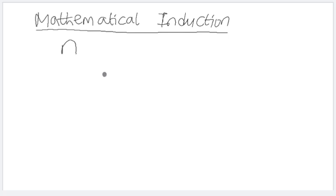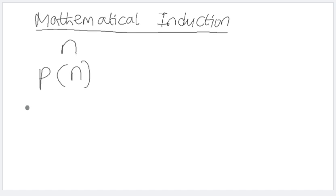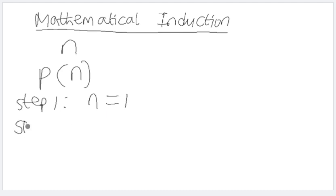The principle of mathematical induction involves three steps to be considered in statement P of n, where n is a natural number. We determine the validity of this statement using three steps. The first step is to check whether the statement is true for n equals to one — this is the factual statement.